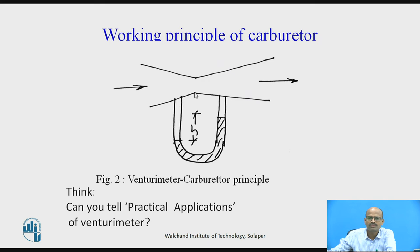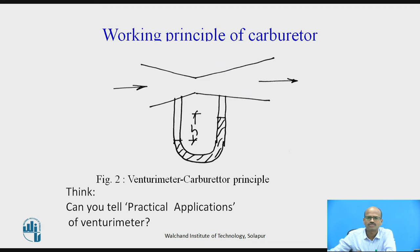Based on this Venturimeter principle, our carburetor works. A practical example of Venturimeter applications: in steam jet refrigeration it is used; whenever you want to carry any material and want to maintain low pressure, you could connect this Venturimeter to that application. It is also majorly used in the civil sector.